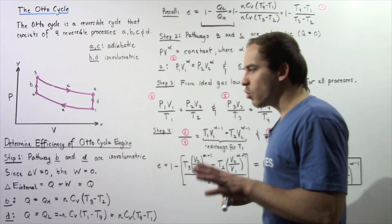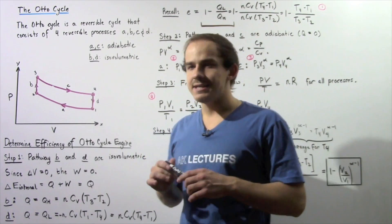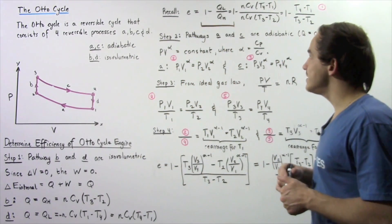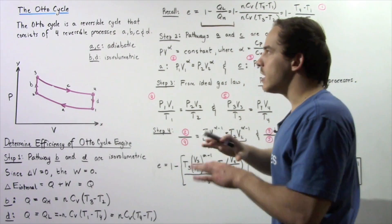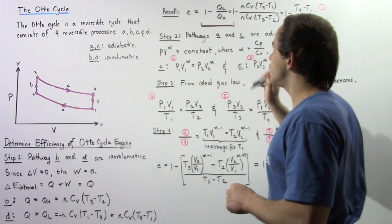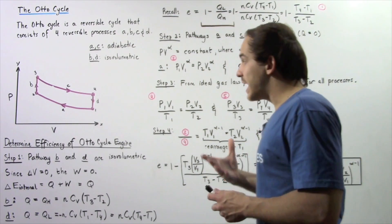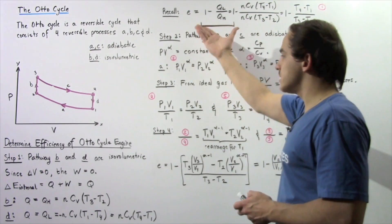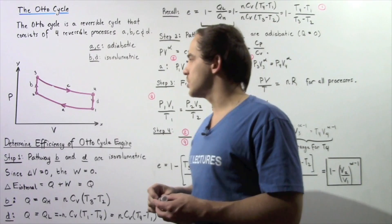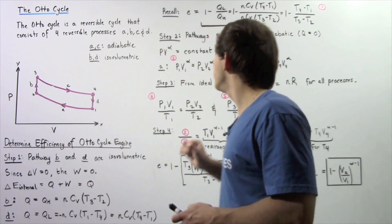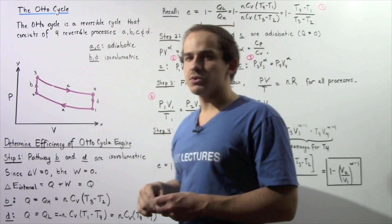Before we begin, let's recall the general equation for the efficiency of any heat engine. The efficiency E of any heat engine is equal to 1 minus QL divided by QH. So, if we want to use this equation to determine the efficiency of the Otto cycle engine, we have to first determine what QL is and what QH is in the Otto cycle.